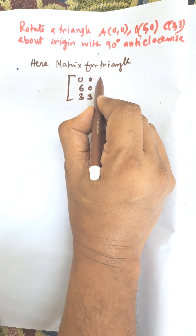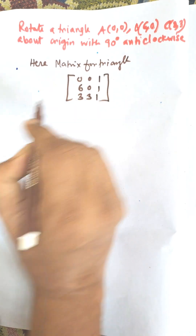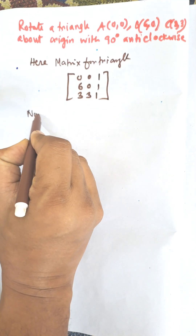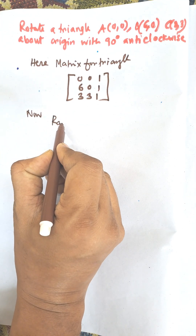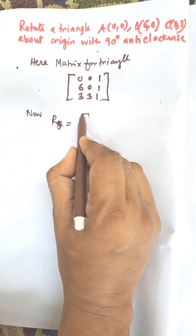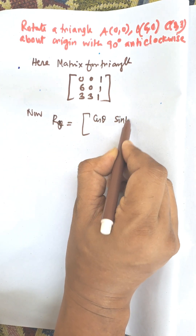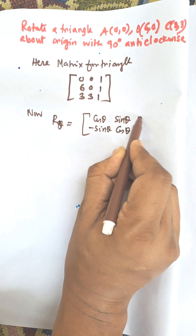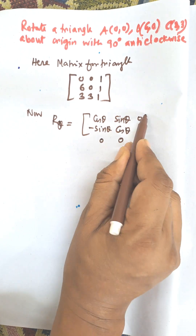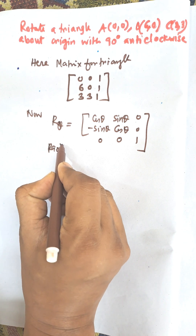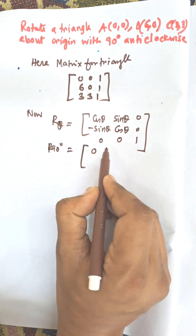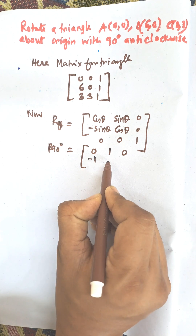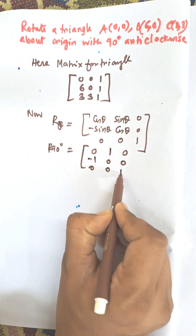This is the row matrix representation: 1 1 1, in homogeneous coordinate system. Now R 90 degree, that is R(theta) equal to cos(theta) sin(theta) minus sin(theta) cos(theta) 0 0 1. Here theta equals 90 degrees, so cos(90) equals 0, sin(90) equals 1, minus sin(90) equals minus 1, giving the matrix 0 1 0 minus 1 0 0 0 0 1.